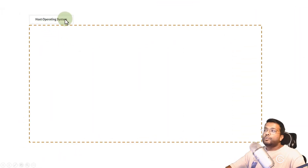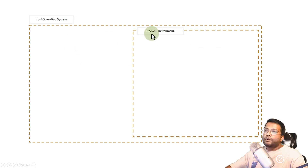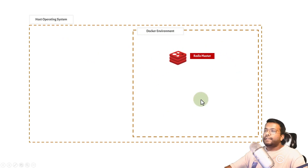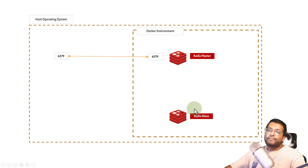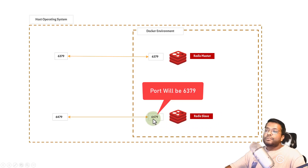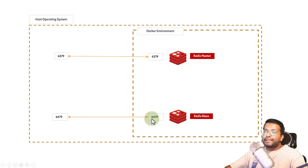Here is the setup: there is a host operating system — let's say a Windows machine. Once you install Docker, it creates a virtual environment inside your host OS where you can deploy containers. We will deploy a Redis master container exposed on port 6379 inside the Docker environment, mapped to port 6379 on the host OS. We will also install a Redis slave instance exposed on port 6479, since the default Redis port 6379 can only be used by one process.